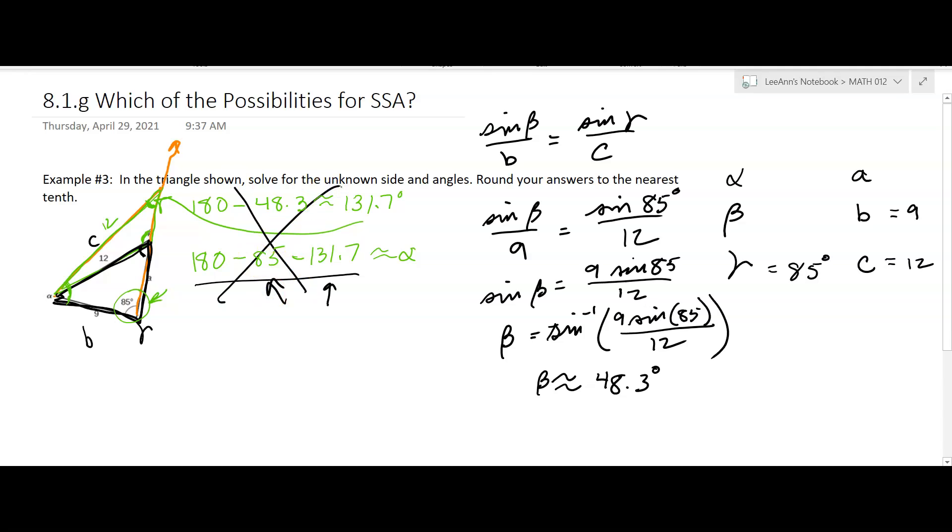Okay, so now we know gamma is 85. We know beta is approximately 48.3 degrees. And now we can find alpha by taking the 180 and subtracting the 48.3 and the 85. And what does that give us? That's 180 minus 48.3 minus 85, 46.7. I could add those up and make sure. Yeah, that looks right.